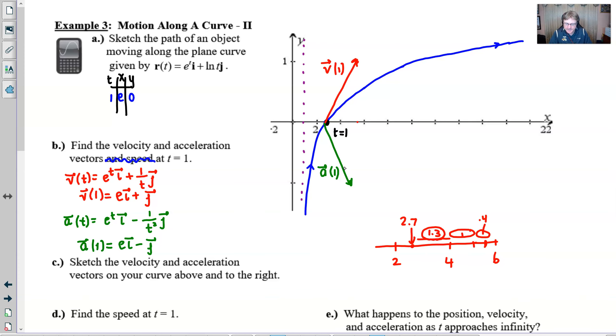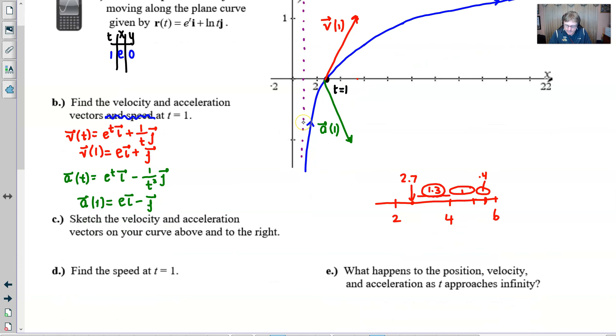We're now going to find our speed. Speed is always defined to be the square root of the sum of the squares of the components of the velocity. That would be e to the t squared, which is e to the 2t, and then 1 over t squared. We want the speed specifically at time 1. If we replace t with 1, we should get the square root of e squared plus 1.